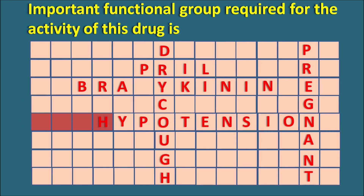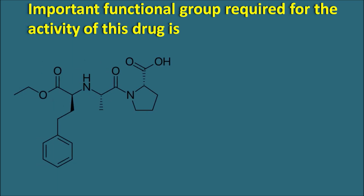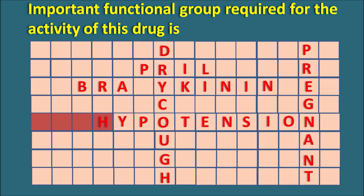The important functional group required for the activity of this drug — here we have four blocks ending with the letter H. ACE inhibitors have a general structure where one important functional group required is COOH, the carboxylic acid group. When present in its free form, it acts as an active drug. So we fill this gap with COOH — the carboxylic acid group is required for activity.